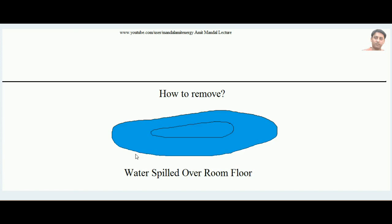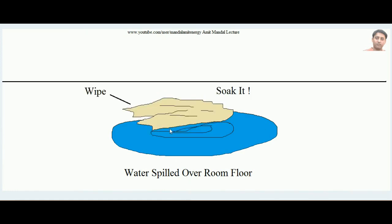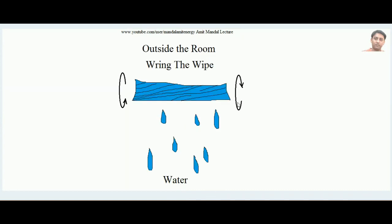The vapor compression cycle is the most common type of refrigeration cycle used worldwide to develop the cooling effect. Now suppose that over the floor of your room some water is spilled and you want to remove it. The easiest way is to take a wipe — a cloth — and soak it with water. Put the cloth over the spill; it starts soaking the water, and then squeeze it outside the room.